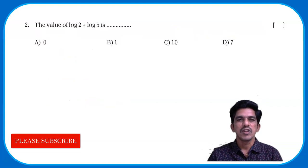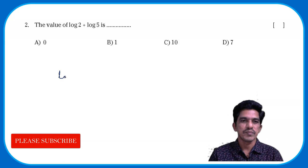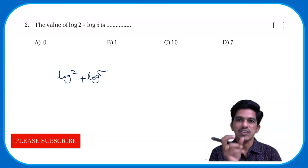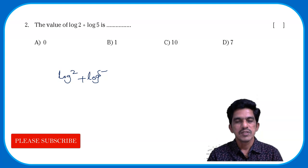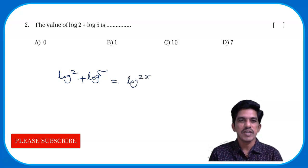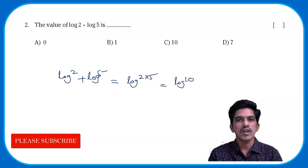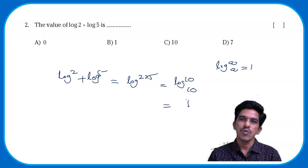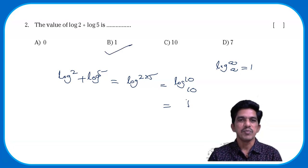Let us move to question number 2. The value of log 2 + log 5 is how much? If you have no base specified, it is base 10. We know that log a + log b = log(a×b). So log 2 + log 5 = log 10. Since log 10 to the base 10 = 1, the answer is 1. Option B is correct.